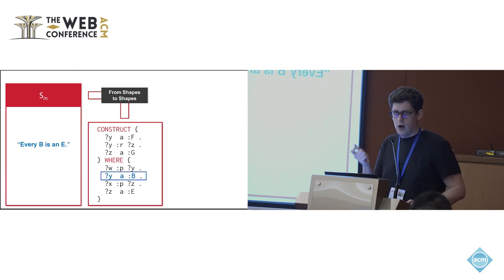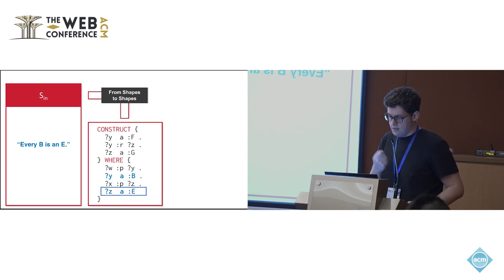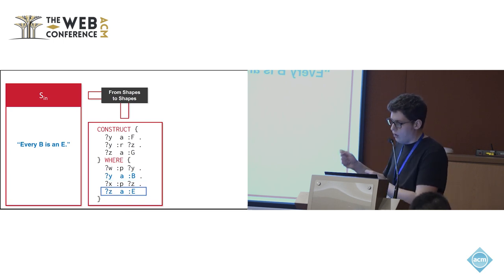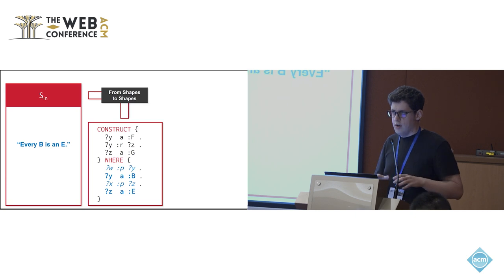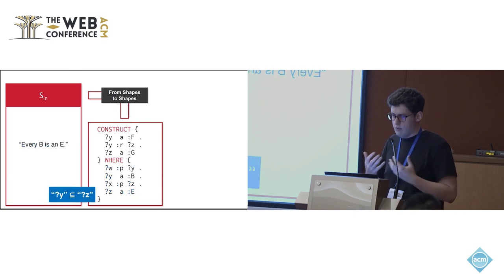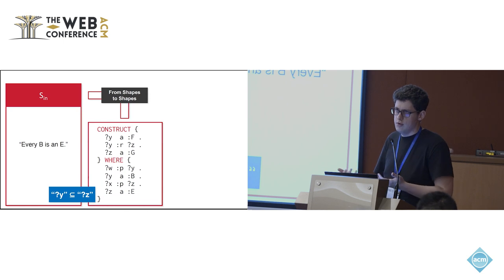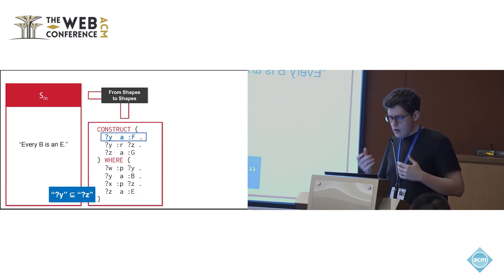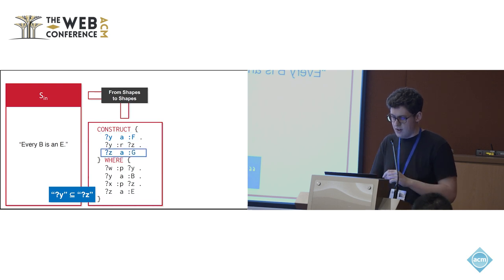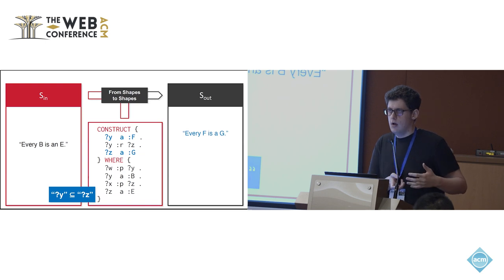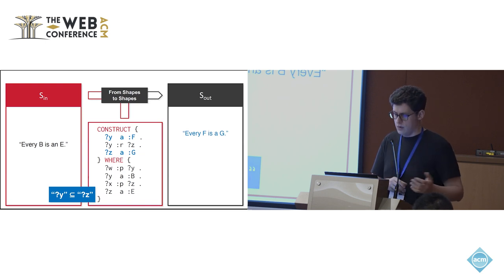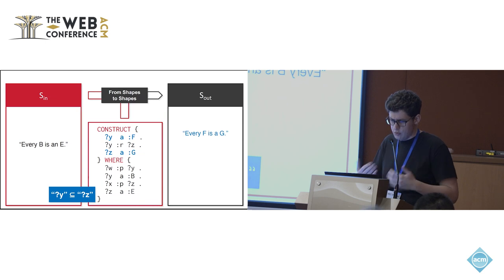In this example, we look at the query and see that Y is of type B and Z is of type E. Since we know every B is an E, and the remaining constraints are similar, we can infer that the bindings for Y must be a subset of the bindings of Z intuitively. With this, we look at the construct part where Y gets type F and Z gets type G. Combining this, we know that every F is a G, and this holds on all output graphs.